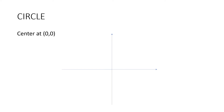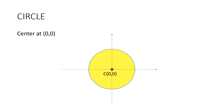Let us now talk about circle with center at (0, 0). So let's say we have the two axes, the x-axis and the y-axis, and the point at the intersection is our center at (0, 0), or point of origin. Let's say we have this circle. From the point of origin, or the center at (0, 0), up to one point of the circle, this will be our radius. This radius is constant, or the same, anywhere in the circle.